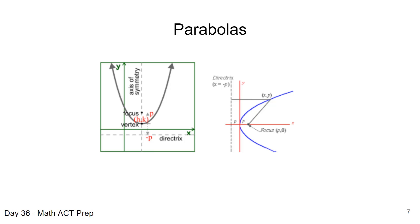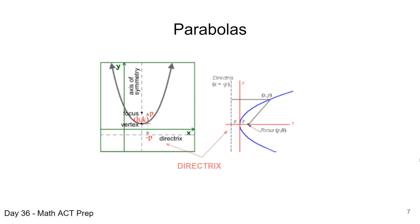If you want to go further and calculate the focus and directrix values, consult your math textbook or online resources — that's covered in your math classes. For the ACT, the key thing is knowing the general location: the focus is inside the curve, the vertex is at the turning point, and the directrix is the line on the outside.